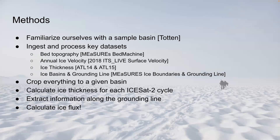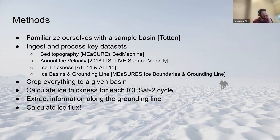For our methods, we familiarized ourselves with a sample basin — in this case we chose Totten Glacier in Antarctica. We ingested and processed datasets including bed topography from MEaSUREs BedMachine, annual ice velocity from ItsLive surface velocity, ice thickness, and we chose ATL14 and ATL15. We used basins and grounding lines from MEaSUREs boundaries, cropped the data to the area of interest, calculated ice thickness, and extracted information along the grounding line to calculate ice flux.